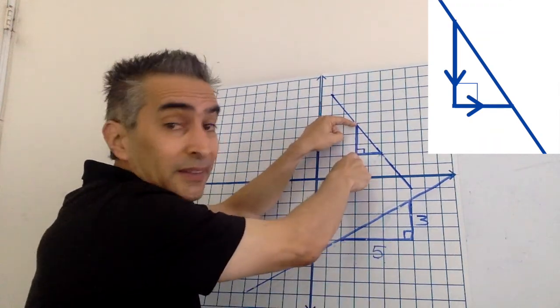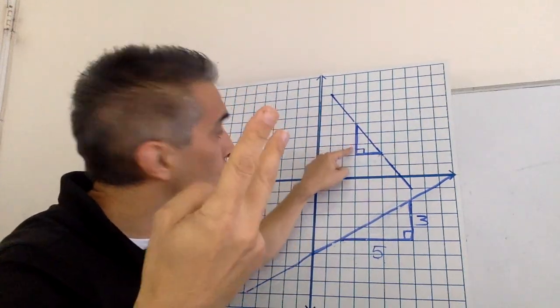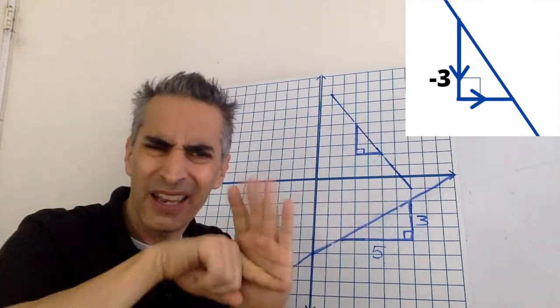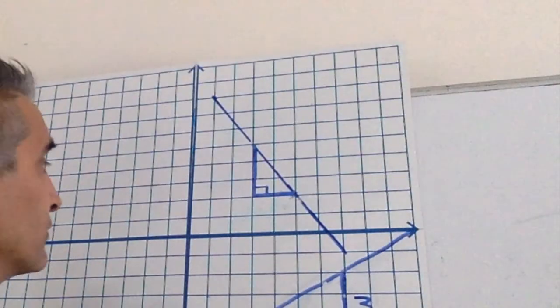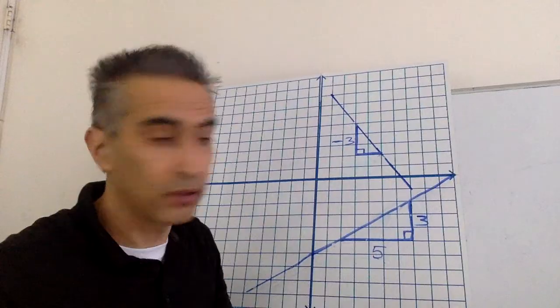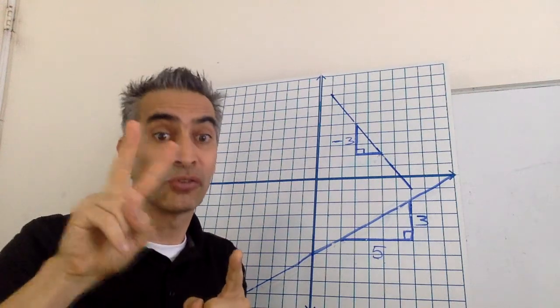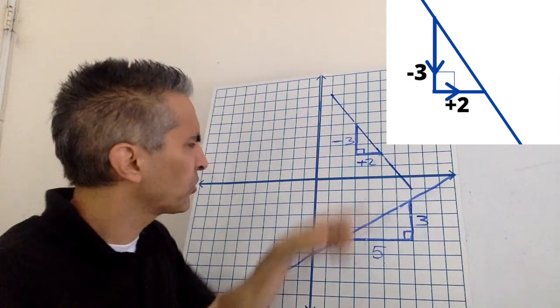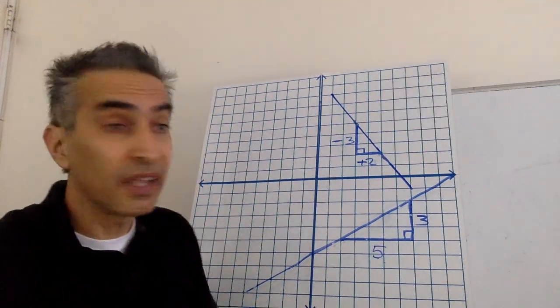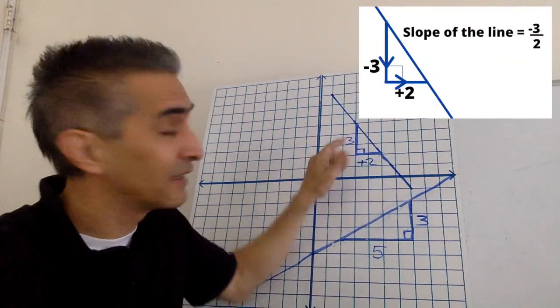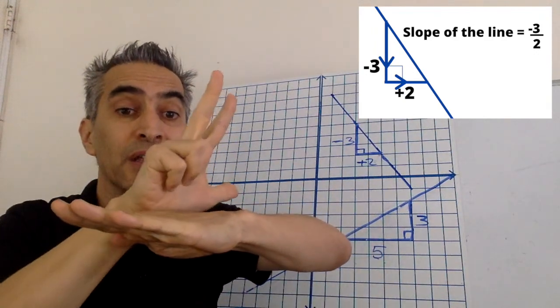Because it's going down, the slope means the vertical height divided by the horizontal length. This vertical length measures one, two, three, negative three. Well, why negative three? Because when you're going down, it's always negative. This horizontal length measures one, two, positive two. Why is this positive? Because when you're going to the right, it's always positive. What's the slope of this line? Negative three divided by positive two, or negative three over two.